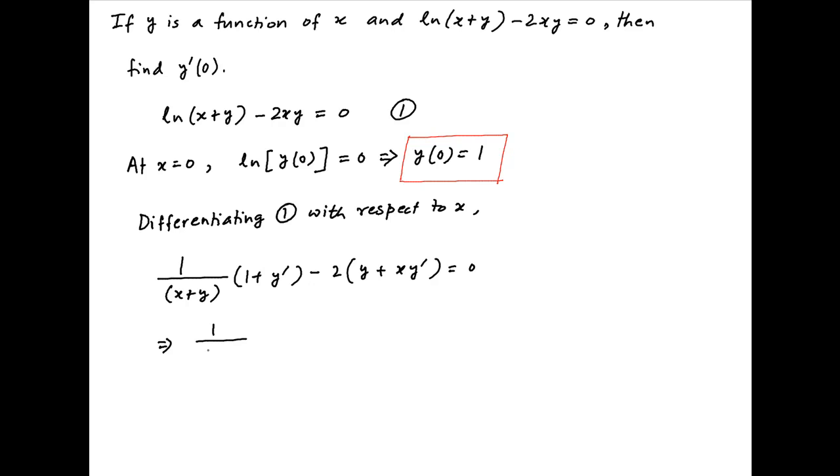Now collecting all terms involving y' on the right hand side, we get 1/(x+y) - 2y = (2x - 1/(x+y))y'.